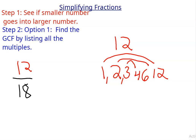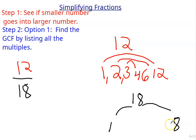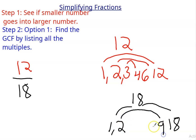So now let's do 18. Does 1 go into 18? Yes, 1 goes into everything. Does 2 go into 18? Yes, 18 is even, so I know it goes — 2 times 9. Does 3 go? Yes — 3 times 6. Does 4 go? No. Does 5 go? No. So I reached the other side, so I know I'm done.